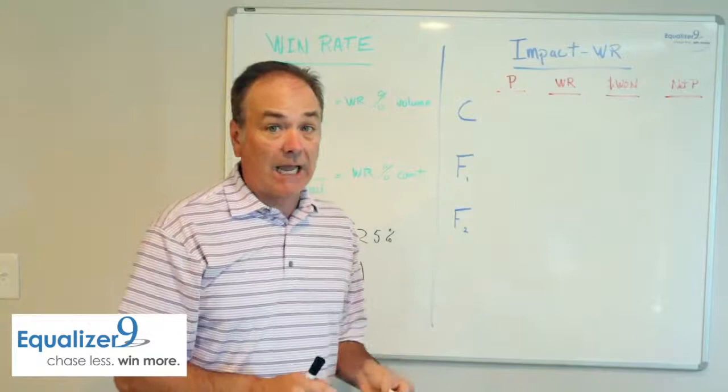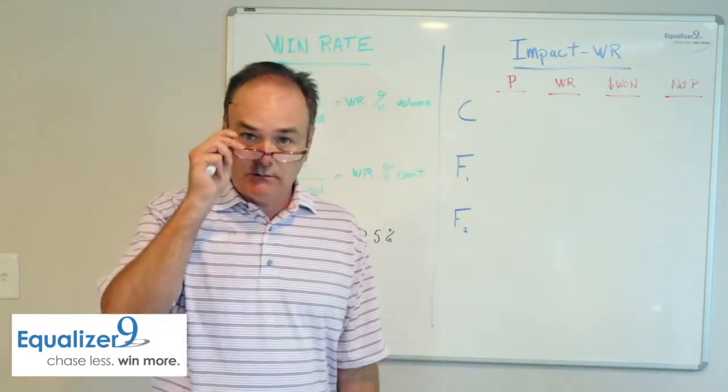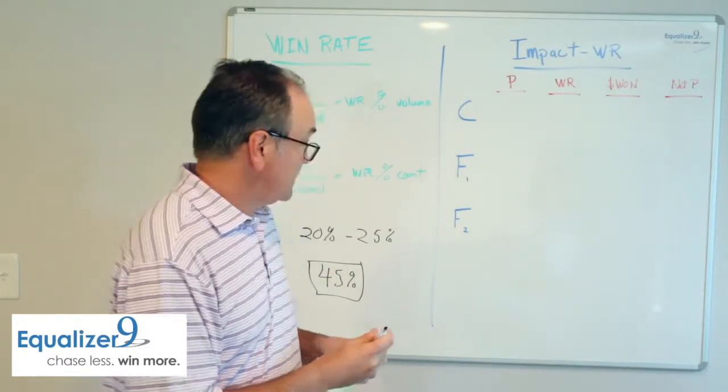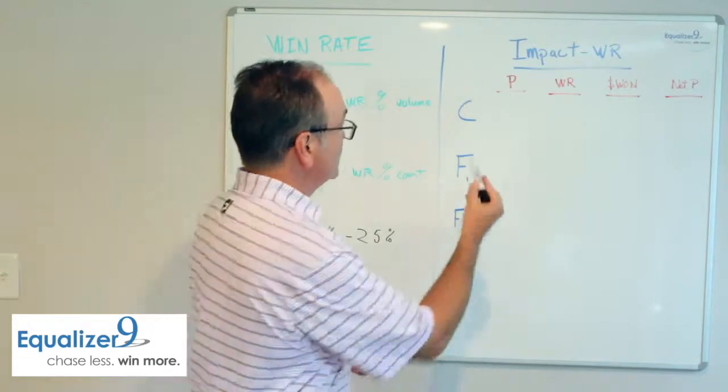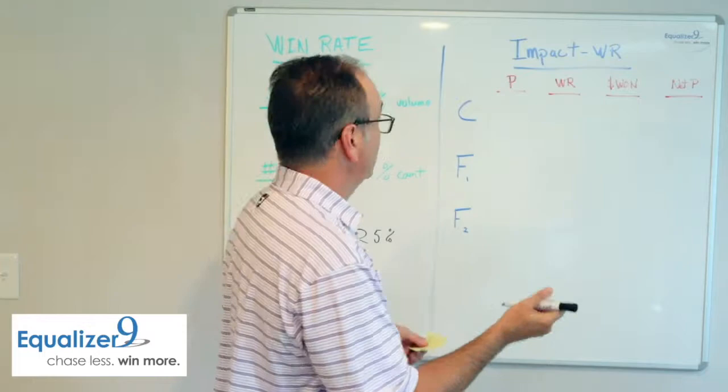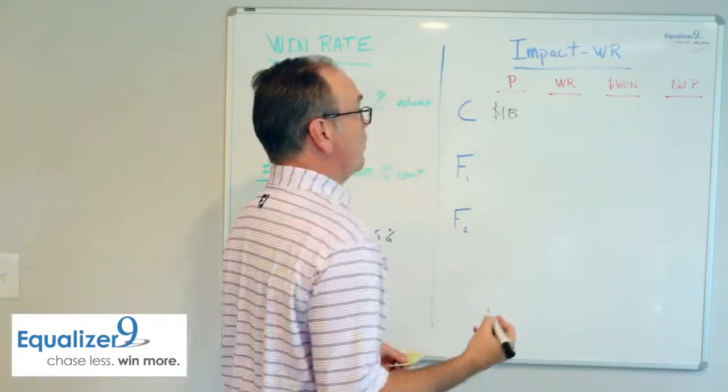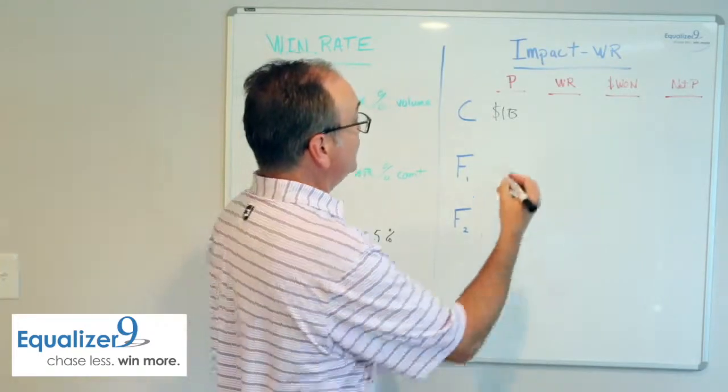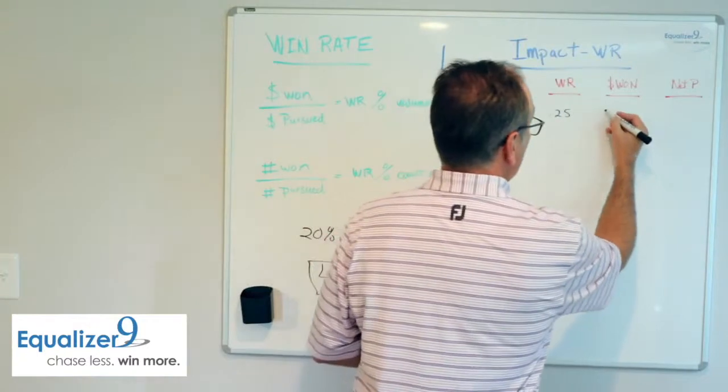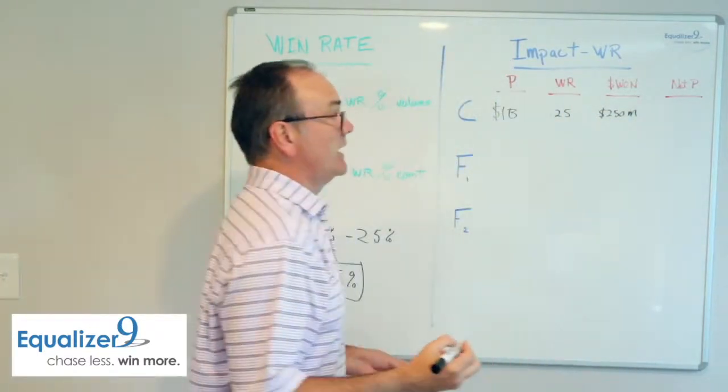Let's move on to the impact of win rate manipulation. And I got my cheat sheet here on my math, so I won't have to do math on the fly. And let's get busy on this. So this represents current state, future state, another future state. So current state, let's say you pursue $1 billion in work. And your win rate is 25%. That means you would win around $250 million in revenues for that given year.